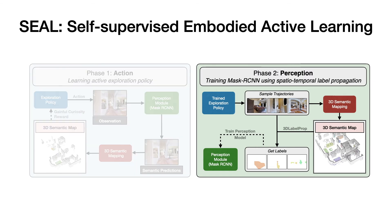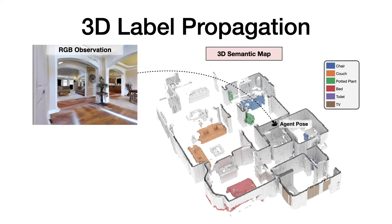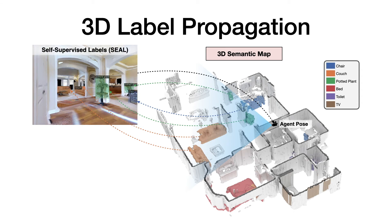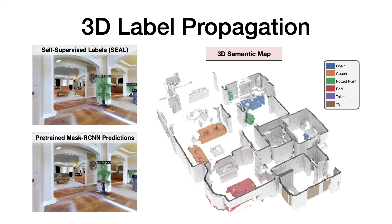During the perception phase, the trained exploration policy is used to sample trajectories in the training environment. For each trajectory, we build the 3D semantic map. After labeling each voxel in the map, we find a set of connected voxels labeled with the same category to find object instances. The instance label for each pixel in each observation is then obtained by using ray tracing in the labeled 3D map based on the agent's pose. Pixel-wise instance labels are used to obtain masks and bounding boxes for each instance. Note that this labeling process is completely self-supervised and does not require any human annotation. Here we see an example of the pre-trained Mask R-CNN not detecting a couch and a chair, but the self-supervised labels obtained using SEAL are correct, because these objects were detected with high confidence in other observations in the trajectory.